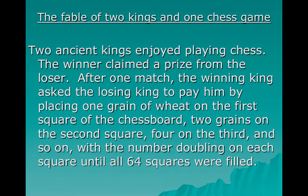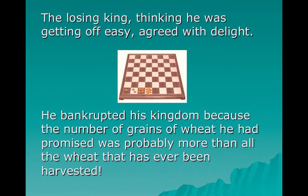Here is a fable that illustrates exponential growth. Two ancient kings enjoyed playing chess, and the winner claimed a prize from the loser. The winning king asked the losing king to pay him by placing one grain of wheat on the first square of the chessboard, two grains on the second, four on the third, and so on — doubling on each square until all 64 squares were filled. The losing king, thinking he was getting off easy, agreed with delight. He bankrupted his kingdom, because the number of grains of wheat he had promised was more than all the wheat that had ever been harvested.